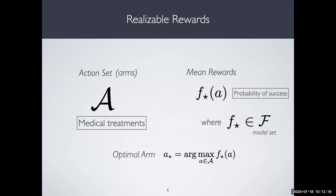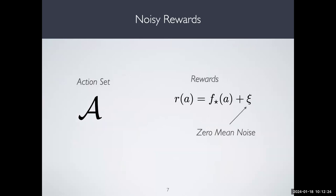You're interacting with a system where there's a mean reward that you don't know, and you get randomized samples when you try out an arm. The question is how many samples do you need?